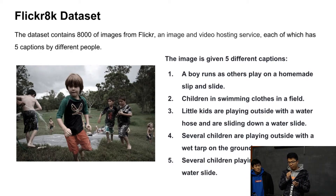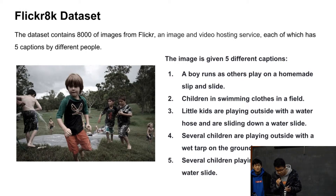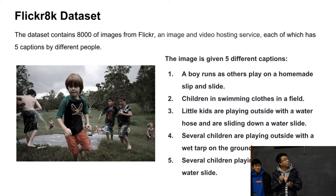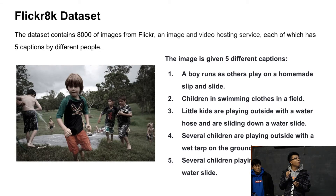One example image on the left is given five different captions: 'A boy runs as others play on a homemade slip and slide.' 'Children in swimming clothes in the field.' 'Little kids are playing outside with a water hose and are sliding down a water slide.' 'Several children are playing outside with a wet tarp on the ground.' 'Several children are playing on a homemade water slide.' The reason we use five different captions is that we want our models to catch the subtleties of the image so that it can generalize better when predicting.